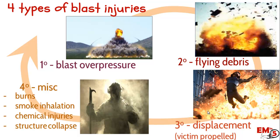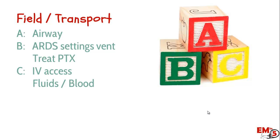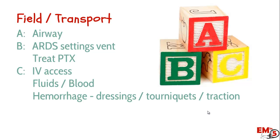There are a lot of different things lumped into that fourth category. When thinking about the ABCs, specifically in field transport, make sure you get an early airway. For breathing, think of these patients with a lung injury kind of like an ARDS patient — when you're setting up a vent after intubation, think of using ARDS-type settings. Make sure you look for and treat any pneumothorax. For circulation, get good IV access and give fluids and blood as needed. These patients especially — you have to look out for hemorrhage.